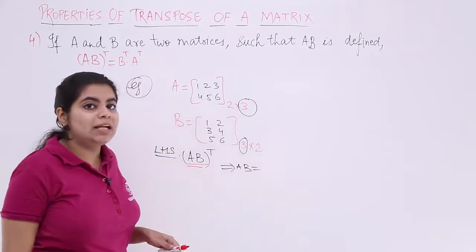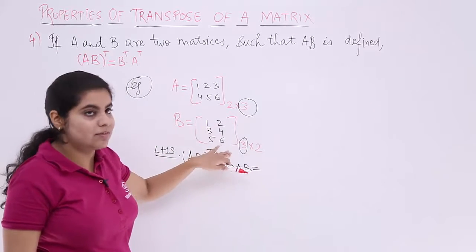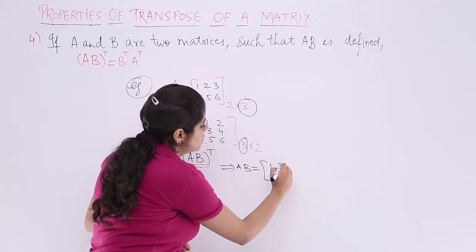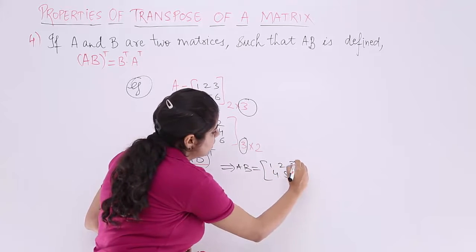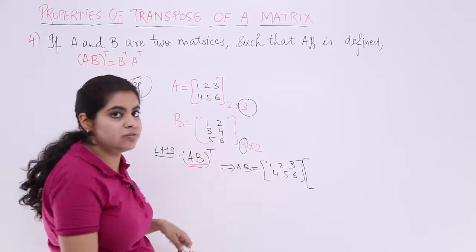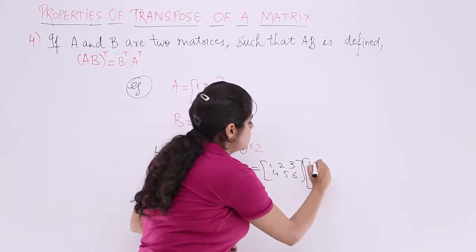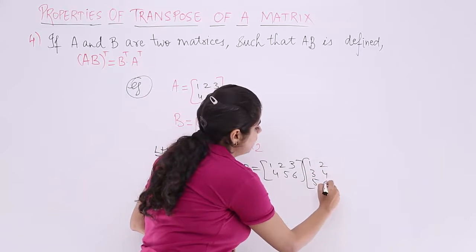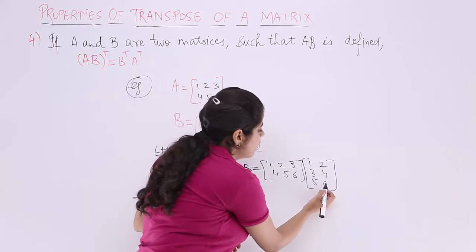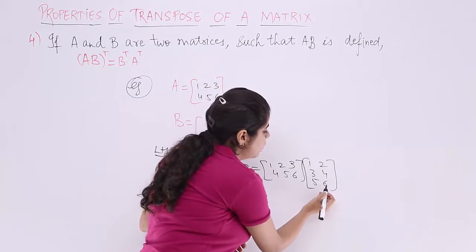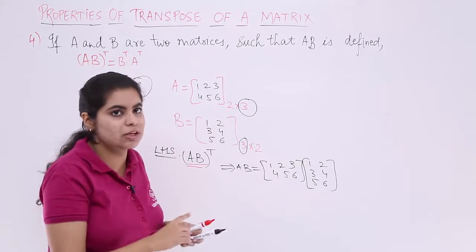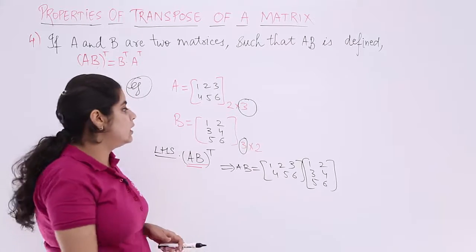To compute AB, we multiply the two matrices. A is [1, 2, 3; 4, 5, 6] and B is [1, 2; 3, 4; 5, 6]. The resulting matrix will be of order 2×2. We proceed element by element: first row, first column, then first row, second column, and so on.